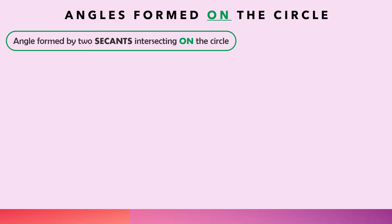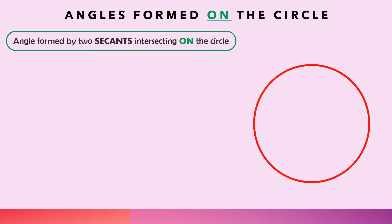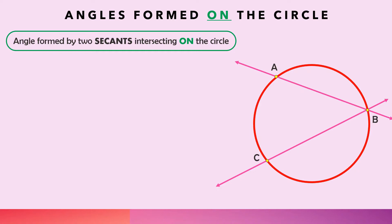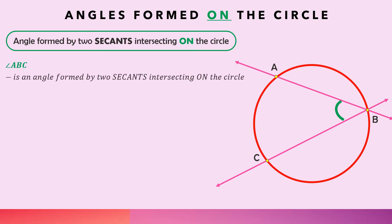Now let's proceed with the angles formed on the circle. For the angle formed by two secants intersecting on the circle: if we have secant AB and secant CD intersecting at point B, which is a point on the circle, then angle ABC is an angle formed by two secants intersecting on the circle. The intercepted arc is arc AC.